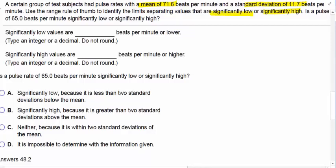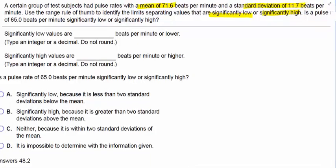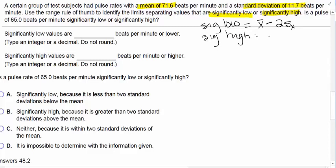That brings up the question, how is significantly low and significantly high defined? Significantly low is defined by the mean minus two standard deviations. And we're going to define significantly high as the mean plus two standard deviations.